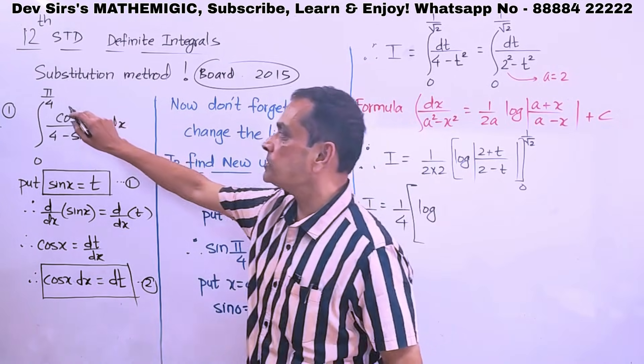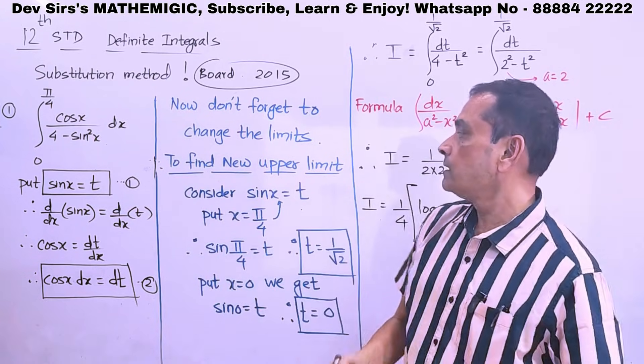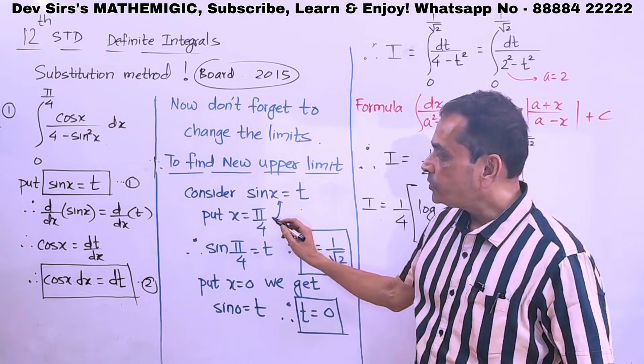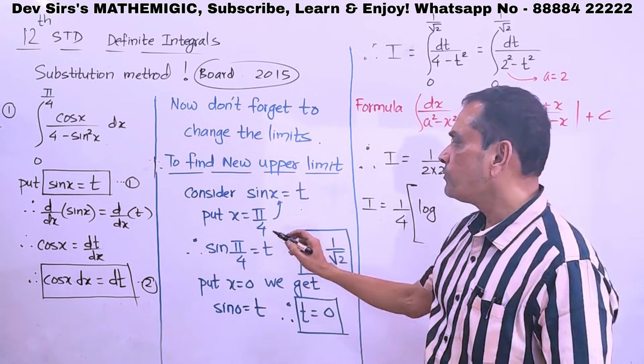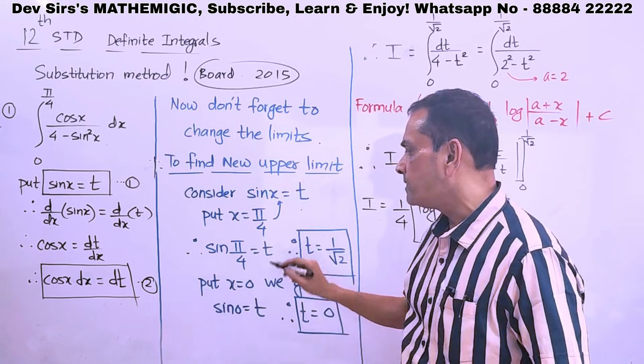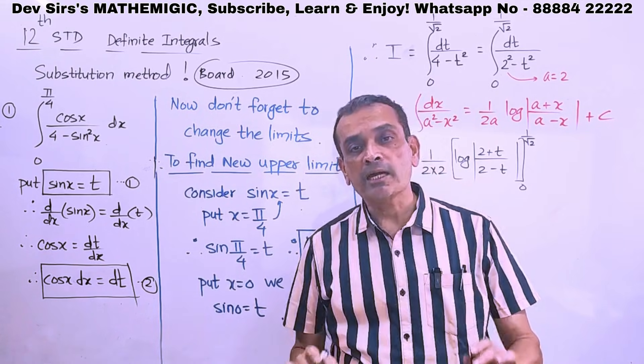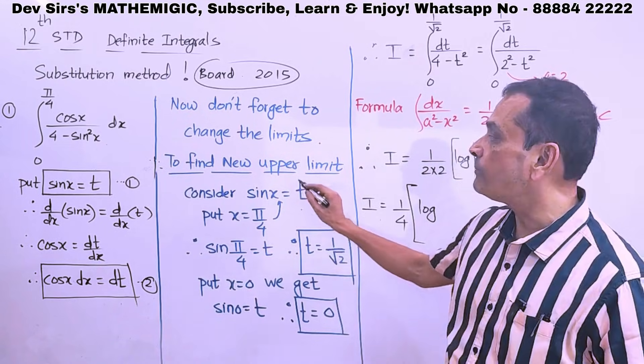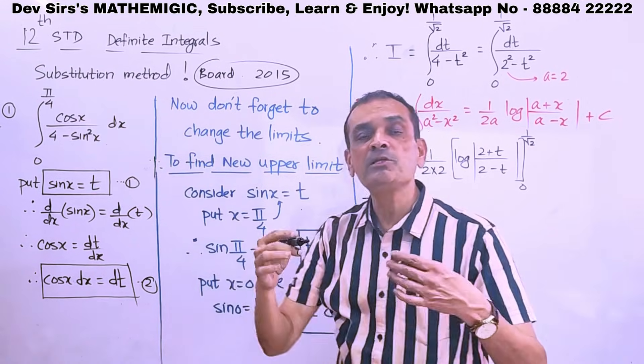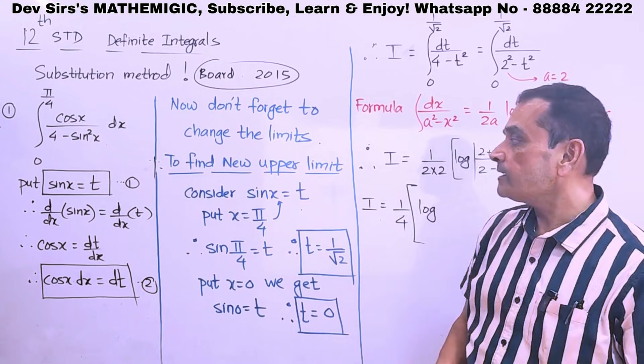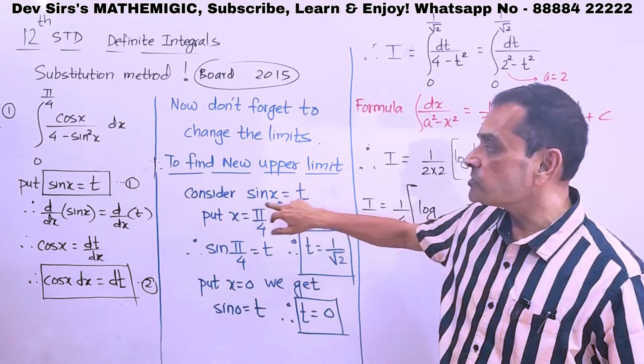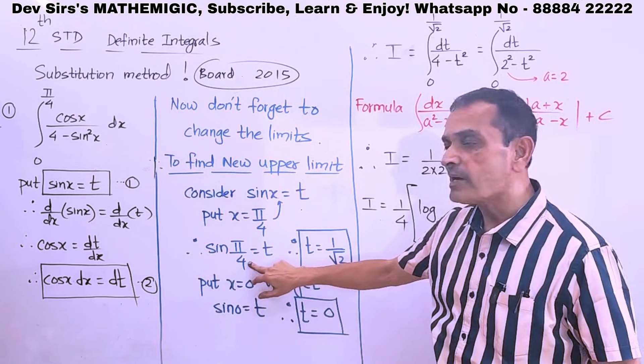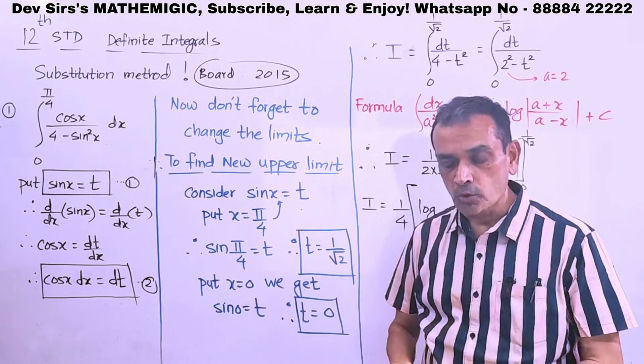New upper limit. This is the original upper limit. We have to change it. How to change it? Our substitution is sin x equal to t. In that substitution, put x equal to pi by 4, that's the original limit. So, when you put x equal to pi by 4, what do we get? Sin pi by 4 equal to t. Sin pi by 4 means 45 degrees. So, sin 45 is 1 upon root 2. So, you get t is equal to 1 upon root 2. This value of t gives us the new upper limit. So, pi by 4 has been changed to 1 upon root 2. How did we change? By considering the main equation of substitution. In that, we put the value of x as original upper limit. So, you get the new upper limit. Sin pi by 4, that is t is equal to 1 upon root 2.